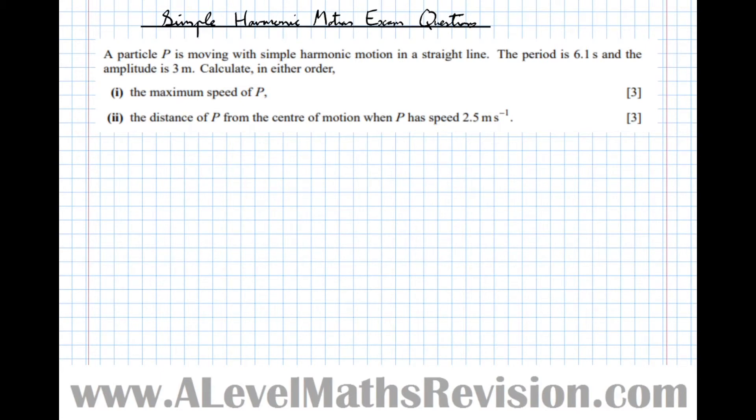A particle P is moving with simple harmonic motion in a straight line. The period is 6.1 seconds and the amplitude is 3 metres. Calculate in either order the maximum speed of P and the distance of P from the centre of motion when P has speed 2.5 metres per second.